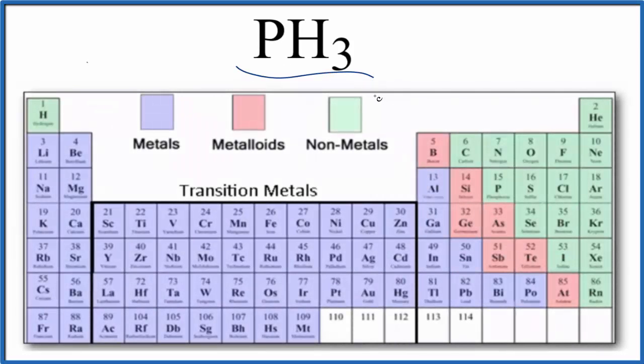Let's take a look at whether PH3 is an ionic or covalent compound. So this is phosphorus trihydride.